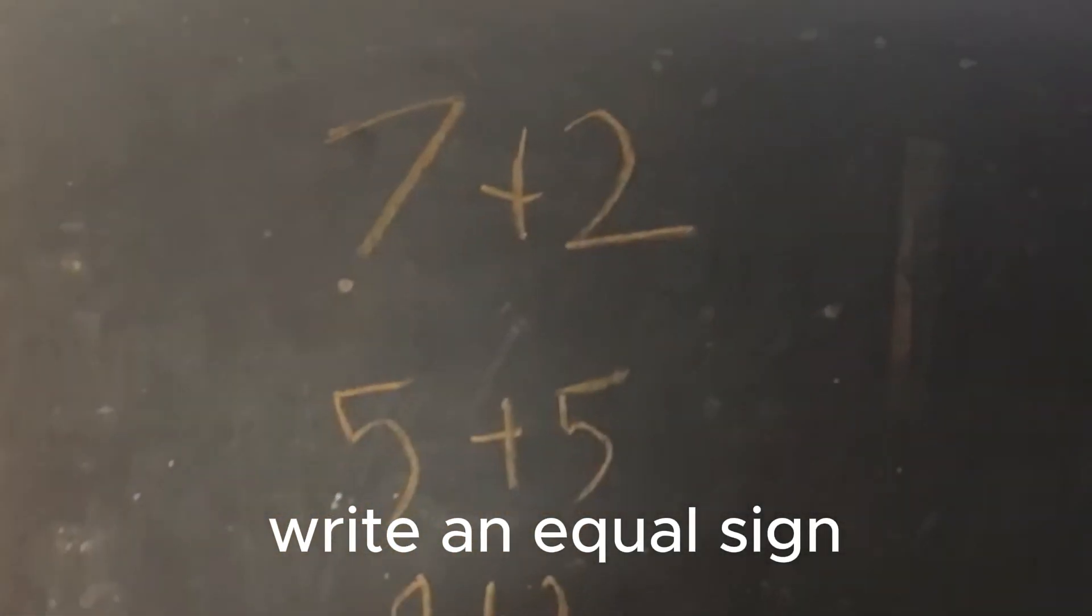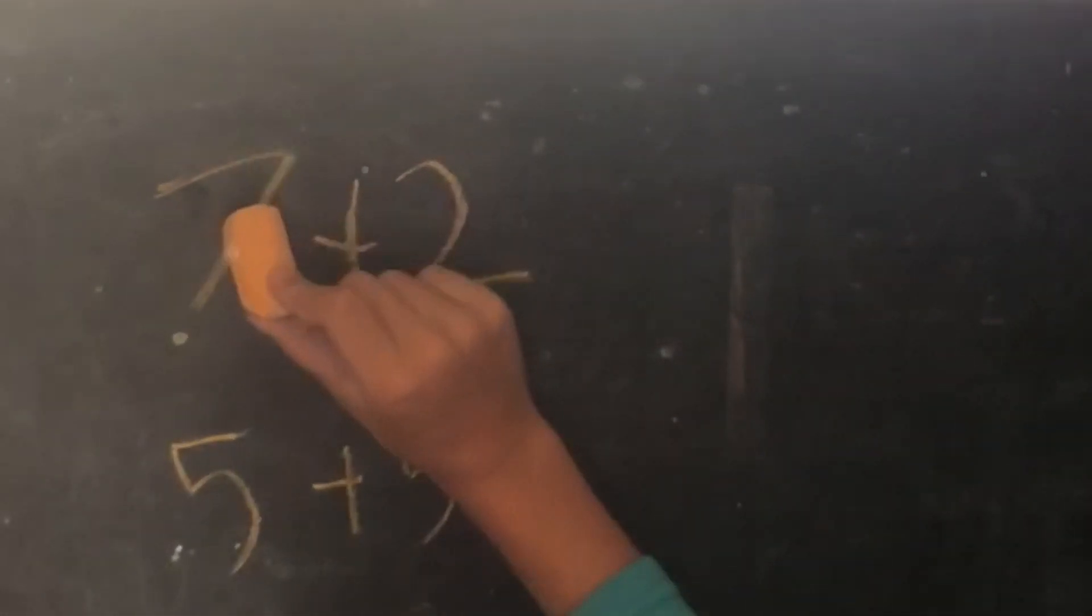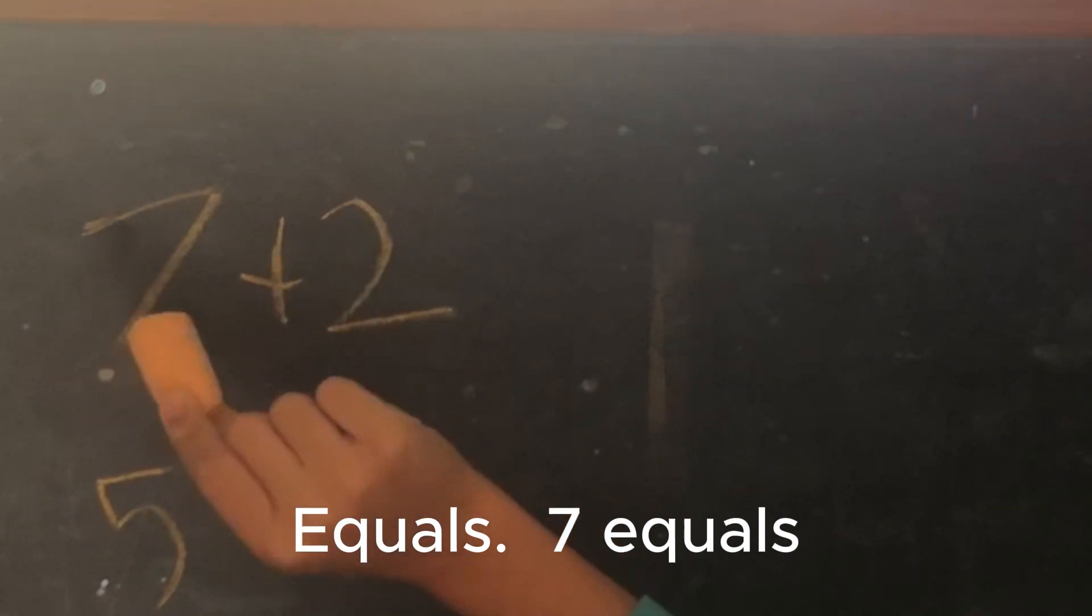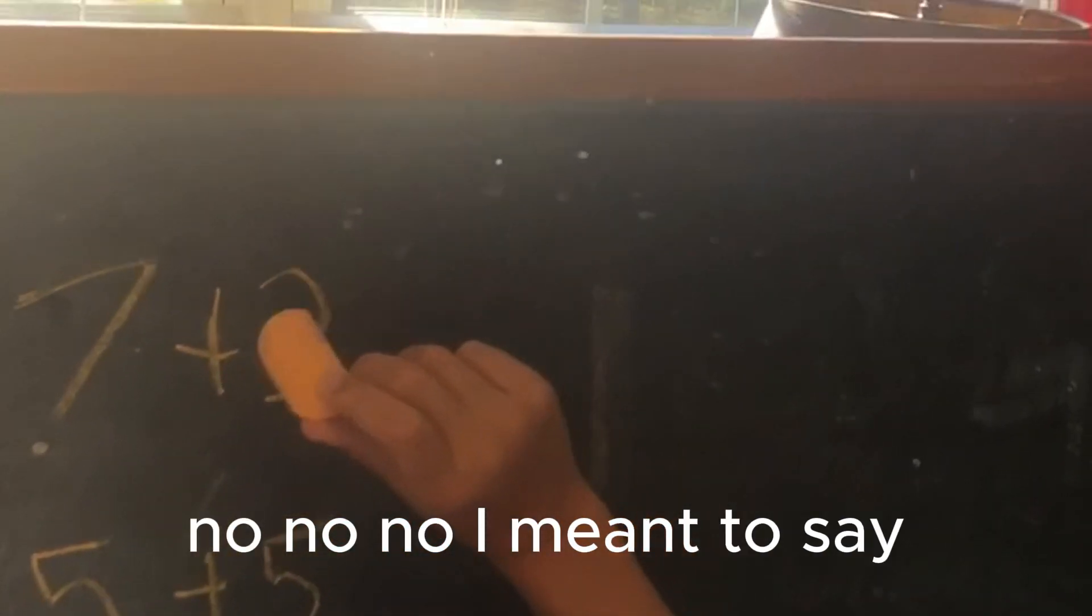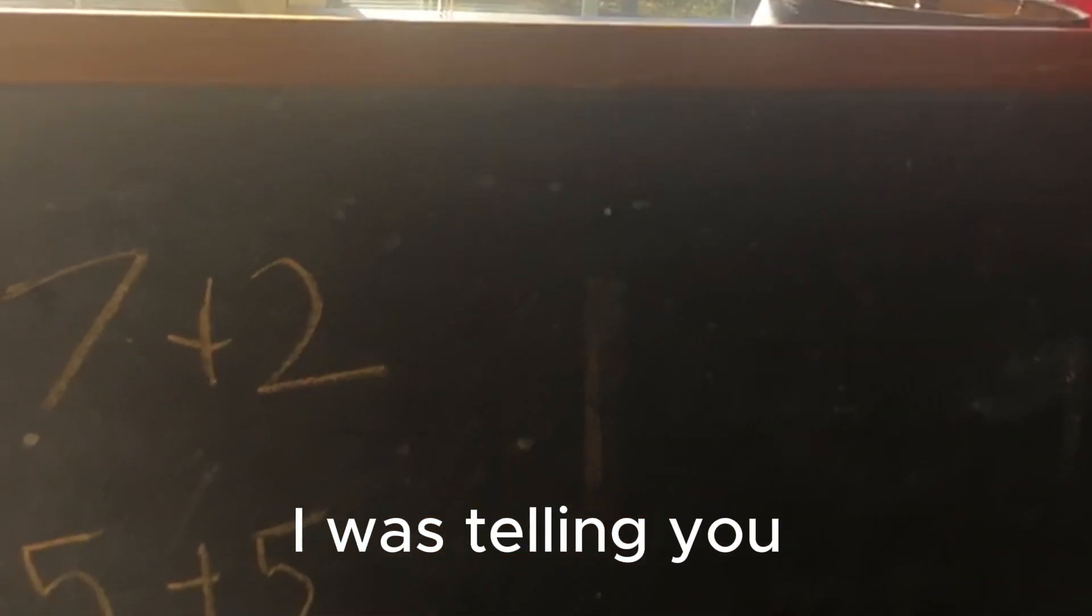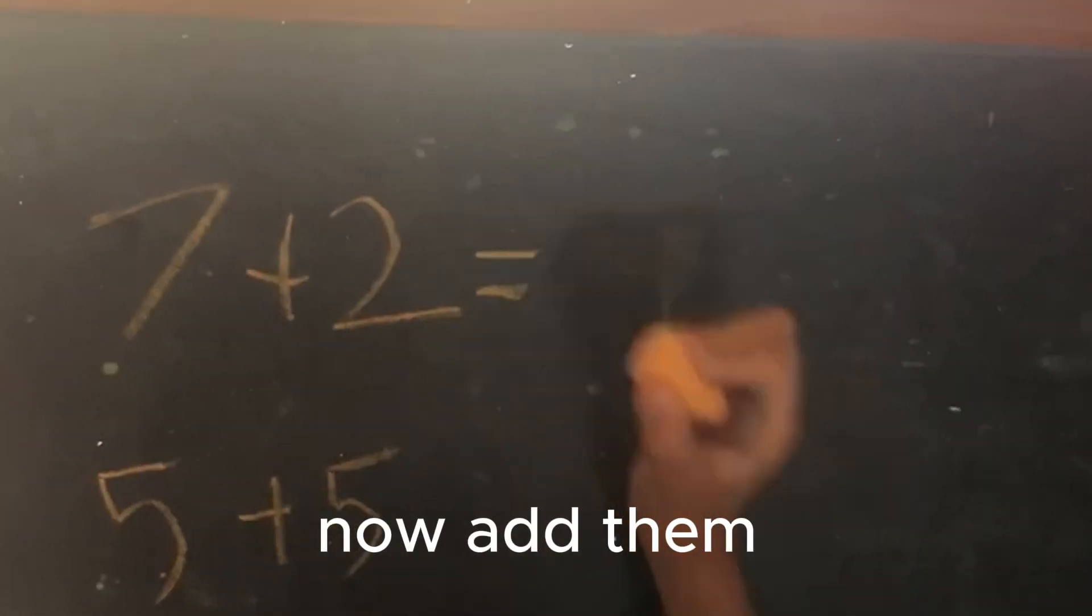Write an equal sign and add them. Okay, equals seven equals—no, no, no, I meant to say I was telling you to write your equal sign. Now add them.